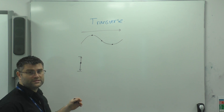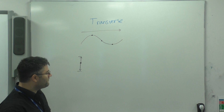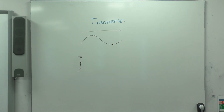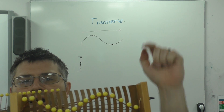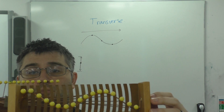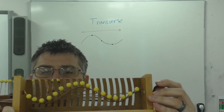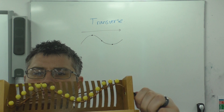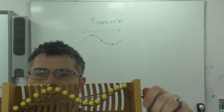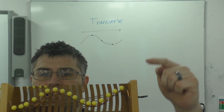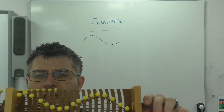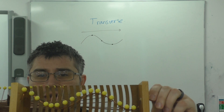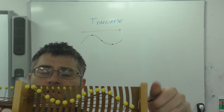We are not just talking about one particle here — we are talking about multiple particles. A nice way of demonstrating this is with my Hague wave machine. You can see these yellow balls along here. As I turn the handle, it's going to show you how the particles might move in a transverse wave. You can see the particles are moving up and down, but the energy is being transferred from left to right. As I rotate this, the particles are moving up and down and the energy is being transferred down the line. That's a transverse wave.